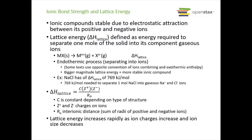Now we're going to talk about ionic bond strength and lattice energy. Ionic compounds are stable due to electrostatic attraction between the positive and negative ions. They form three-dimensional crystals or lattices, where you have attraction in all directions, with alternating positive and negative ions in 3D structures. The formula units don't represent a molecule. Lattice energy, delta H lattice, is the energy required to separate one mole of the solid ionic compound into its component gaseous ions — taking some ionic compound and separating it into its positive metal ion and its negative anion.